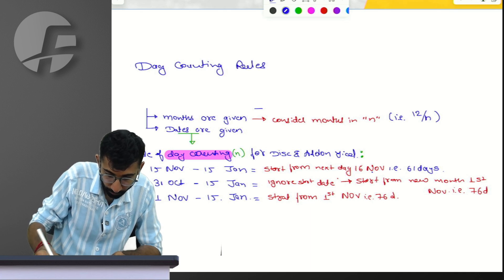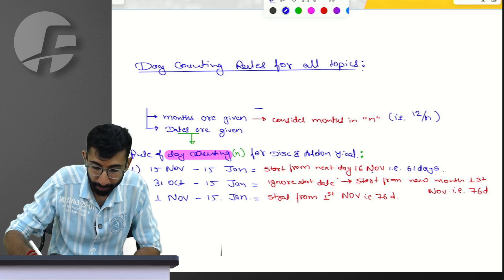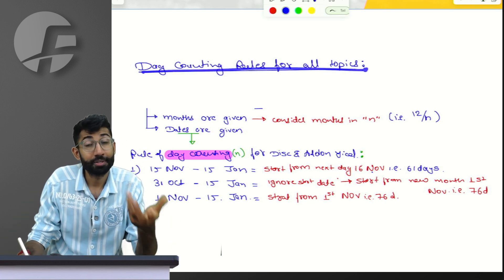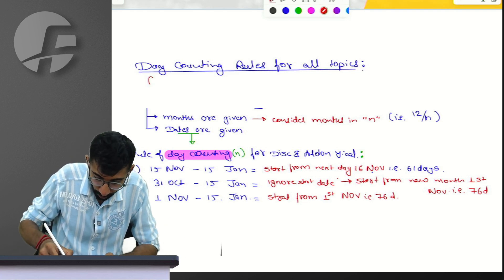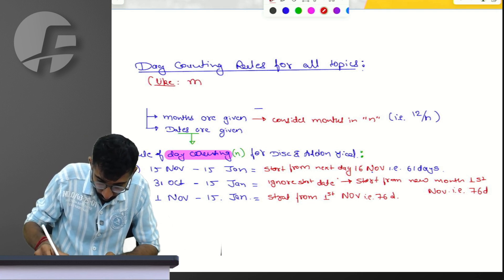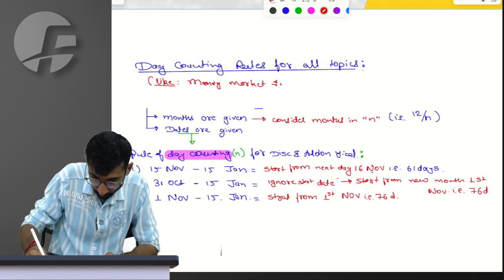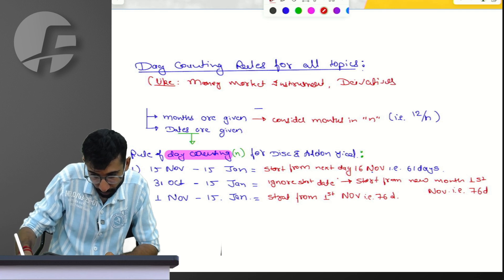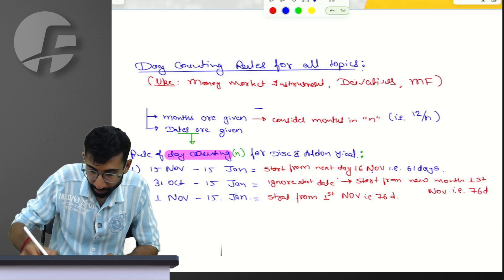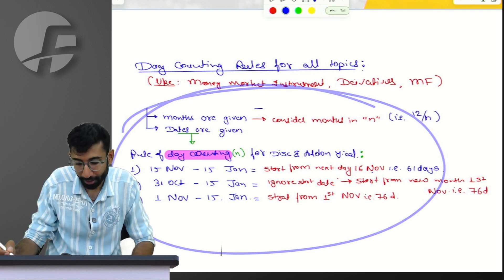This is the day counting rules for all topics. Primarily it will get applied automatically to the topics in which day calculation is needed — like the topic of money market instruments, like the topic of derivatives, and like the topic of mutual funds. Primarily in these three areas, day calculation is needed, for which this rule applies.